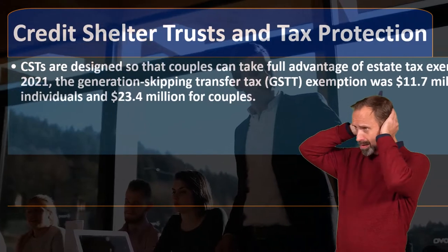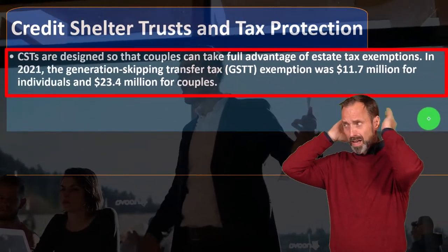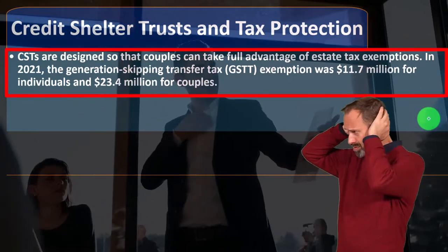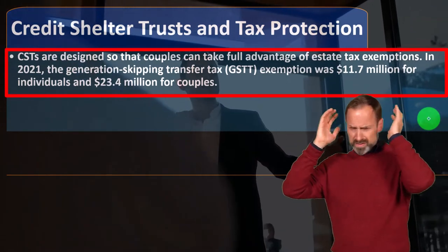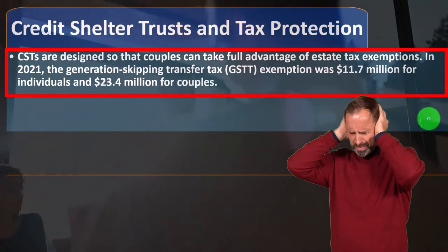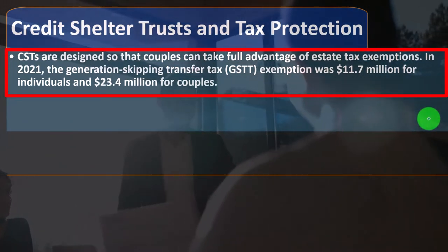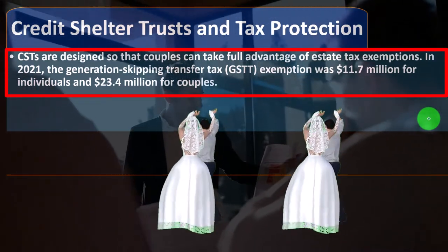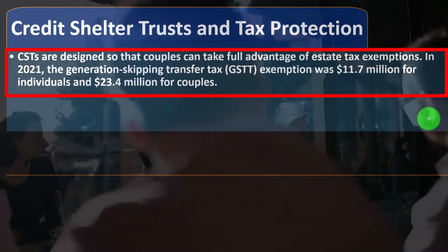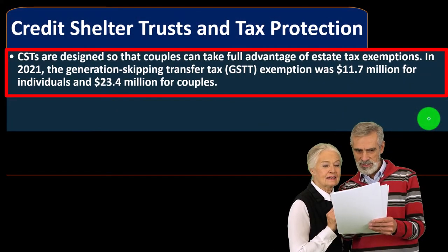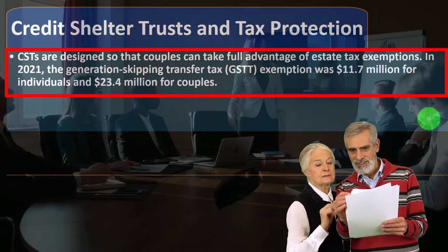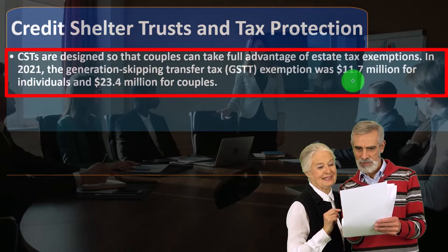Credit shelter trusts and tax protection: CSTs are designed so that couples can take full advantage of estate tax exemptions — similar to maximizing standard deductions for two individuals in an income tax context. In 2021, the generation-skipping transfer tax (GSTT) exemption was $11.7 million for individuals and $23.4 million for couples. Keep in mind that if the government applies an estate tax, the knee-jerk reaction is for wealthy individuals to try to give all their money away before death, which is why gift rules are tied to estate taxes.